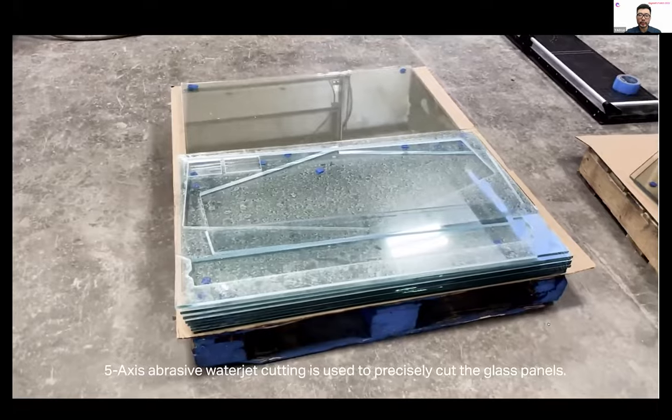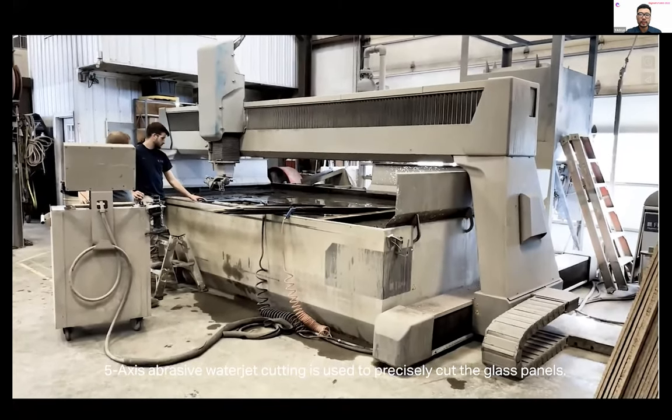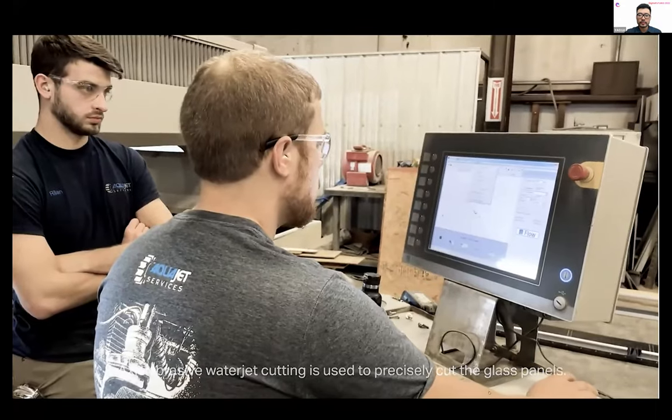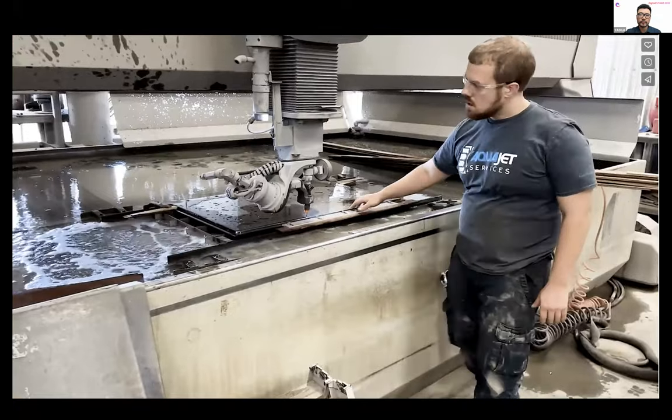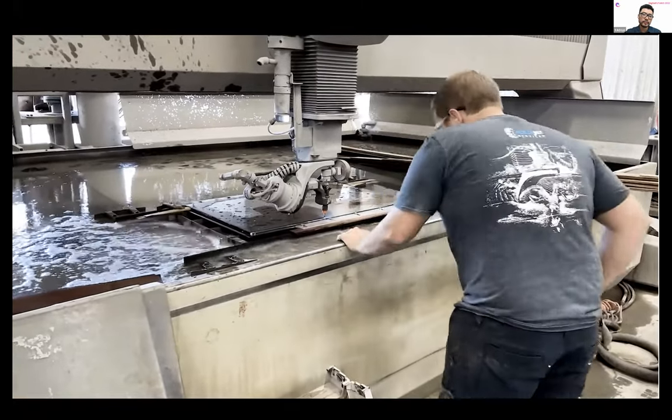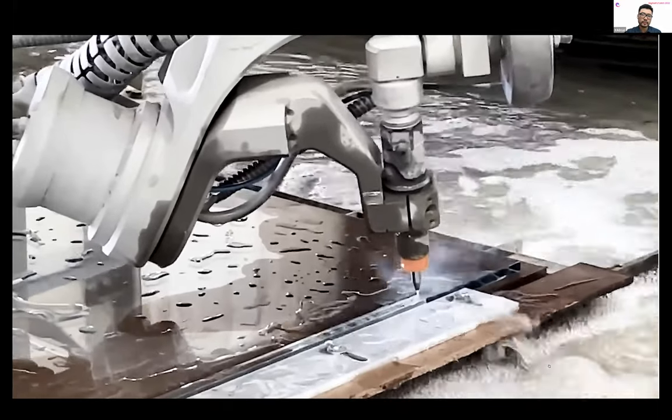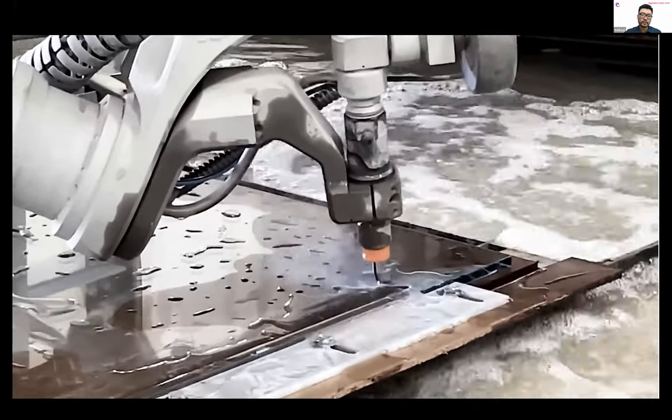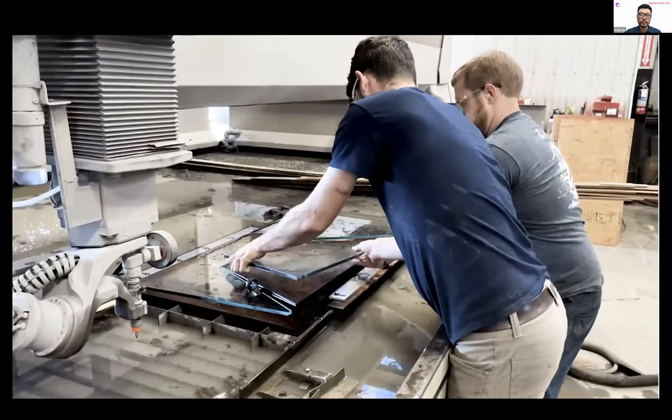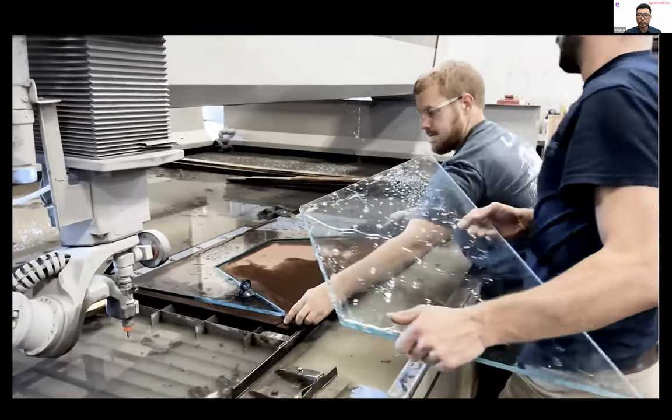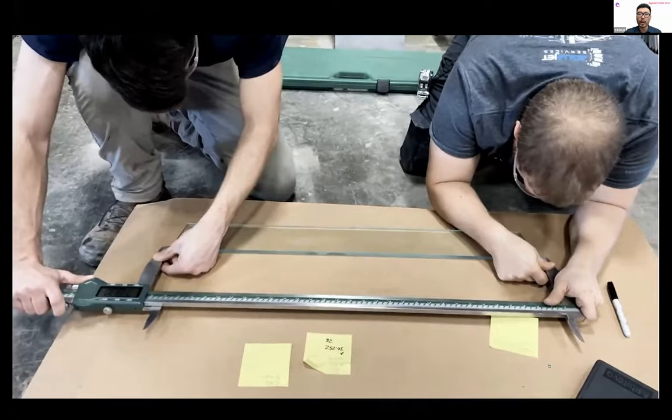All the glass parts are cut using 5-axis water jet cutting. The water jet cutting is fairly precise, and according to the fabricator, the error is below 0.1 millimeter.